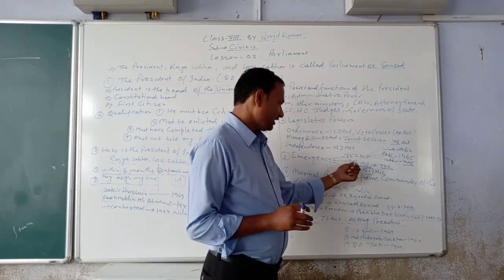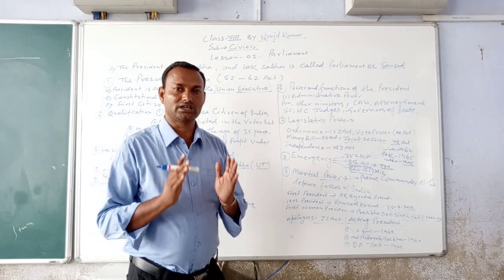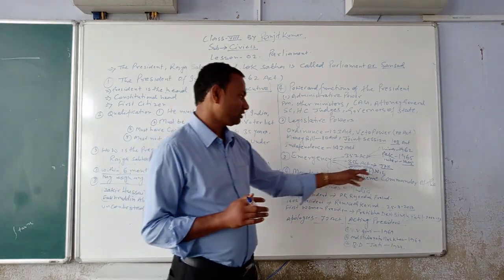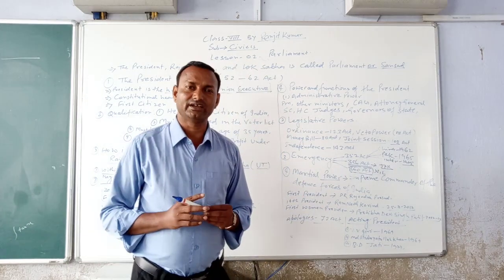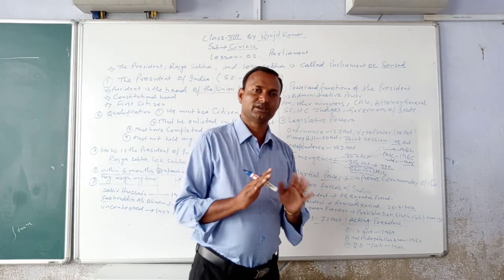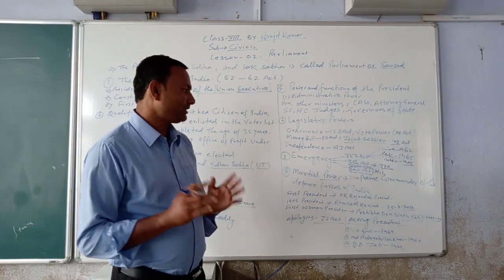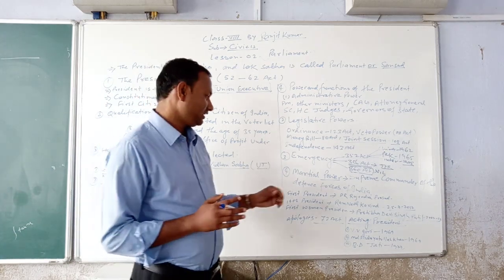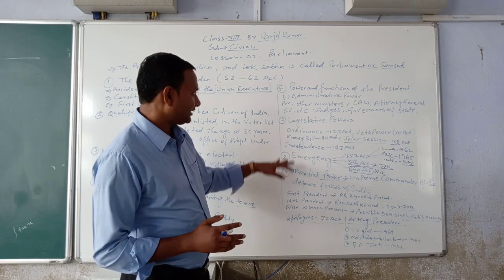Article 356 deals with President's Rule, which is imposed when the state government fails. Article 360 is Financial Emergency. The President is also the Supreme Commander of the Indian Armed Forces — this is the military power of the President.